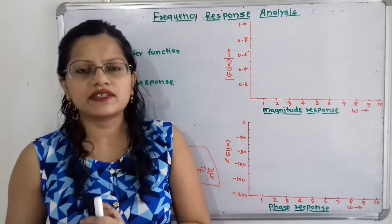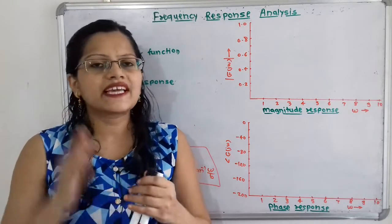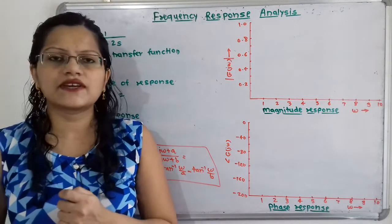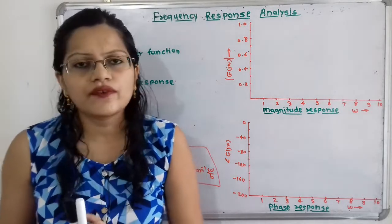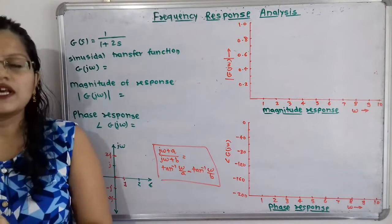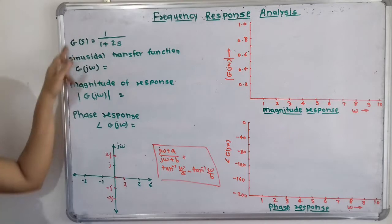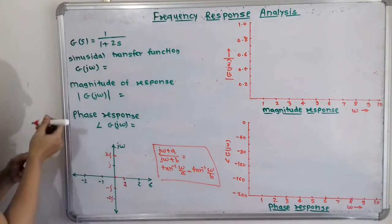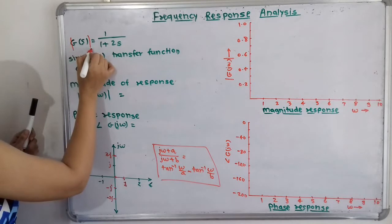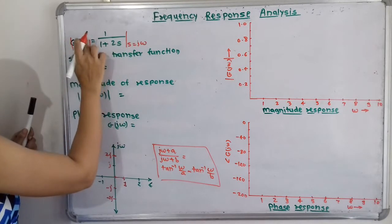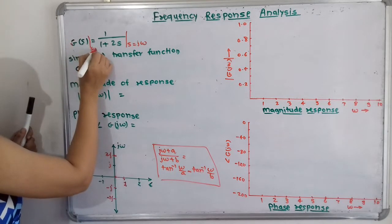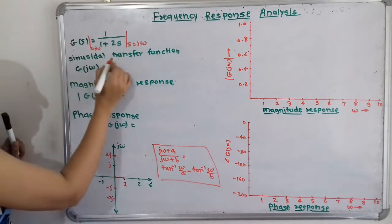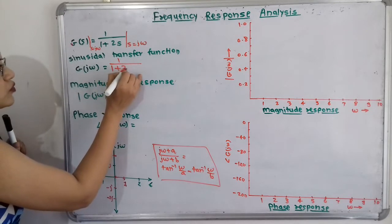The first step for the given system is to convert it into the frequency domain. Since omega is frequency, we will convert the system in terms of j*omega. This is called the sinusoidal transfer function — instead of s, we replace it with j*omega. So G(j*omega) = 1 / (1 + 2j*omega).